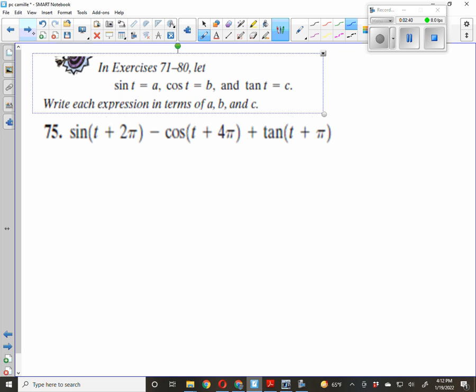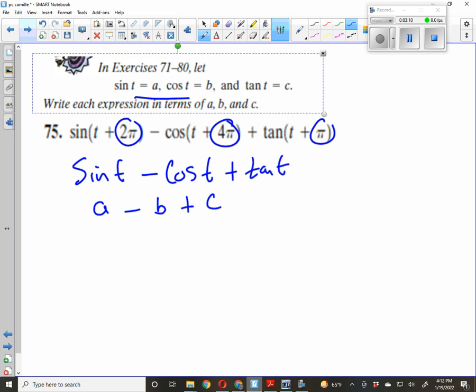This is periodic, so this is just the sine of t. This is periodic, that's 2π, right? So this is minus the cosine of t. Tangent has a period of π, so that's periodic, plus tangent of t, or a minus b plus c is our answer, just by substituting.